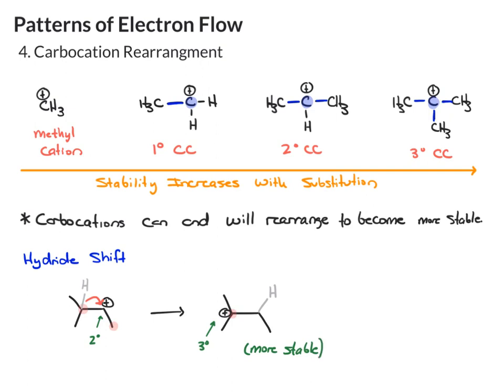Think about the positive charge on a carbon as a void — an emptiness of electrons, or kind of a pothole on that carbon. What you've done is taken some gravel from this pothole and added it to this one, so that one's now full and happy, but now you've left an emptiness on this carbon. That's essentially what the carbocation rearrangement is. So if you have a hydride you can move, that's going to be preferred.